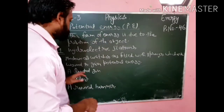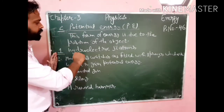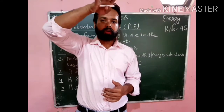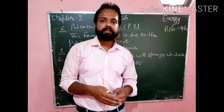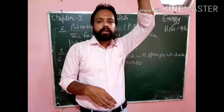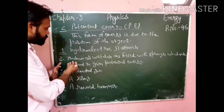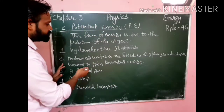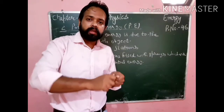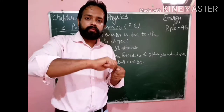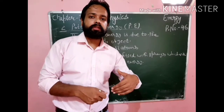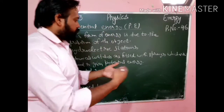Now see the examples of potential energy from your book. First: hydroelectric stations — water is stored at a height, and from this height the water falls on special wheels called turbines, which run generators and produce electricity. So the potential energy of the water is used to produce electricity. Second: mechanical watches are fitted with springs which are wound to gain potential energy. Like a toy car — when we wind the key, the work done is stored as potential energy, and when we release the car it moves forward, converting potential energy into kinetic energy.